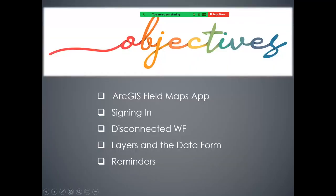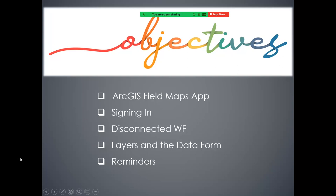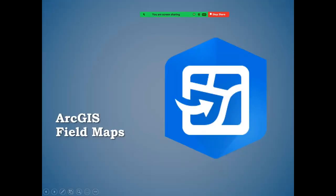What are we going to talk about today? I'll cover the ArcGIS Field Maps application — what it looks like to sign in and out — because there's nuance between a training map and the official map for data collection. We'll overview the disconnected workflow, look at the Grasshopper Mormon Cricket layers, review the data form and enter some data together. I'll demo on the iPad, and try to show the iPhone view as well, then go over some reminders.